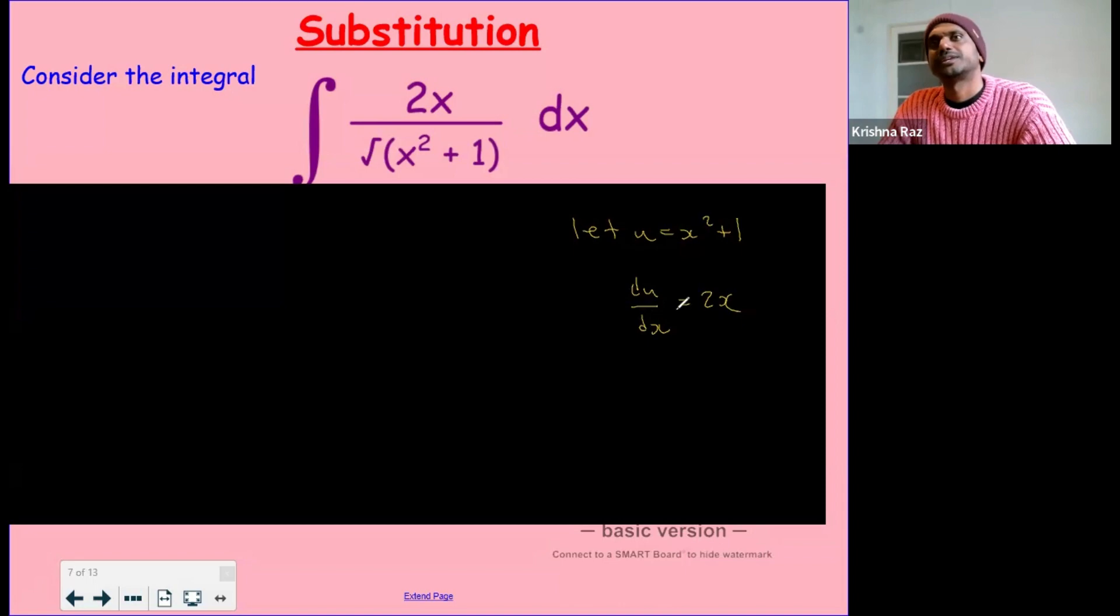Now, the du by dx will follow the usual rules of multiplication. So we can make dx the subject. dx will equal du over 2x.